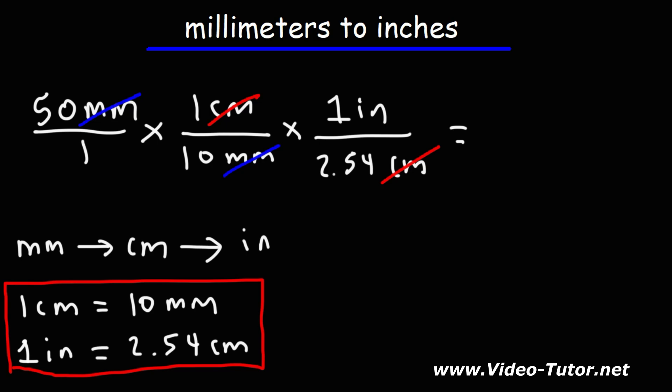Now in order to perform this operation, we're going to multiply by the numbers on top of the fractions and divide by any numbers on the bottom. So we're going to take 50, then divide it by 10, and then divide that result by 2.54.